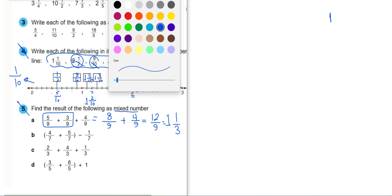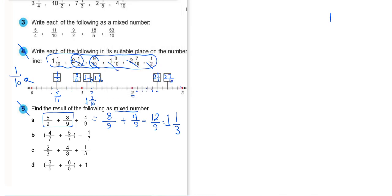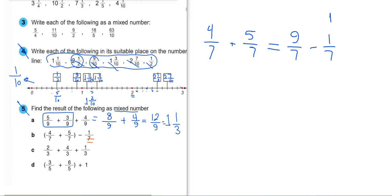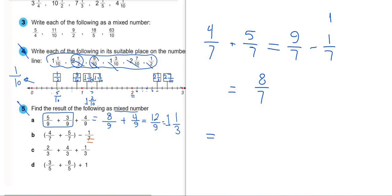Letter B: 4 over 7 plus 5 over 7 minus 1 over 7. First, 4 over 7 plus 5 over 7 equals 9 over 7 — an improper fraction. Then minus 1 over 7: 9 minus 1 equals 8 over 7. We must put it as a mixed number. 8 over 7: is 8 divisible by 7? Decrease by 1 — 7 over 7, yes. 8 minus 7 equals 1.